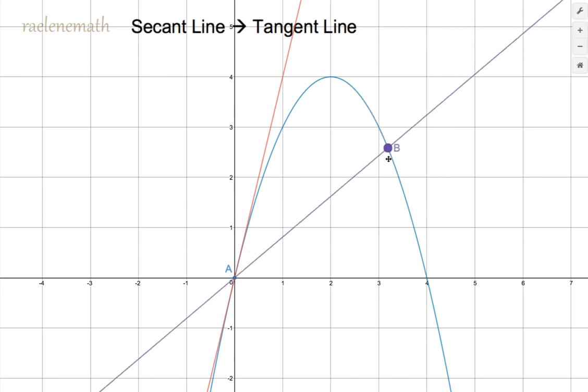But if we want the purple line, the secant line, to turn into the tangent line, then we are going to move point B closer and closer to point A, the point of tangency.